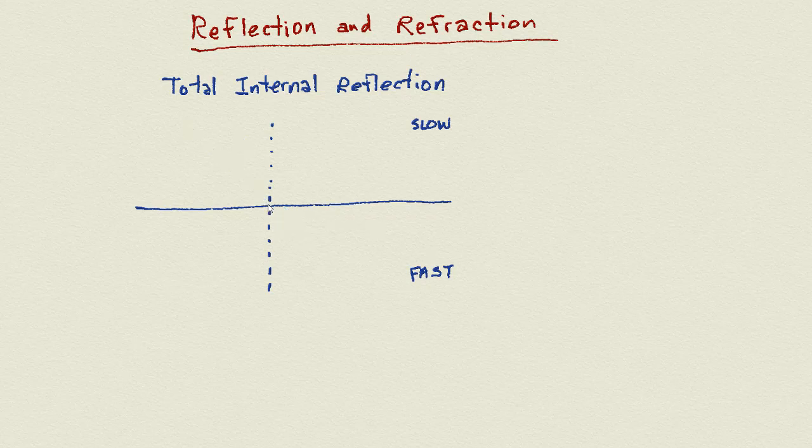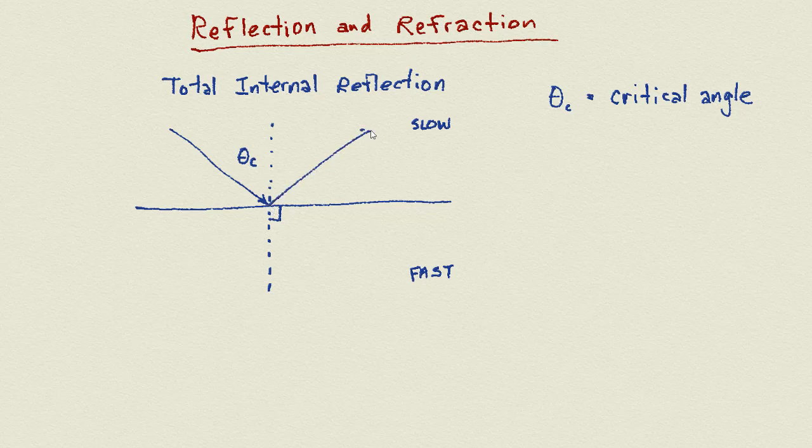The angle where this first happens has a special name. It's called the critical angle. And because we're refracting to 90 degrees and getting this total internal reflection now, it'd be nice to know what that angle is. Now you have to understand that any angle bigger than the critical angle, you'll still get total internal reflection. The critical angle is just the first angle where this occurs.